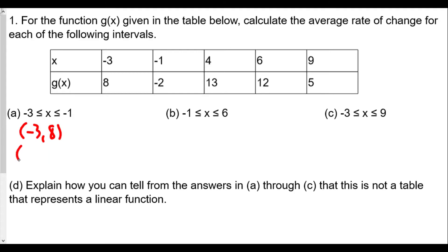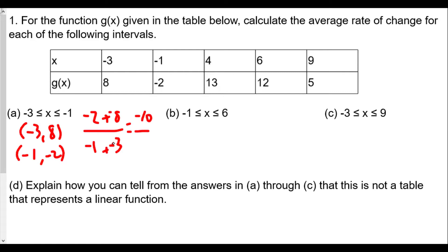The other coordinate is negative 1 comma negative 2. So the change is: negative 2 minus 8 over negative 1 minus negative 3. That gives us negative 10 over 2, so the average rate of change for the first interval is negative 5.